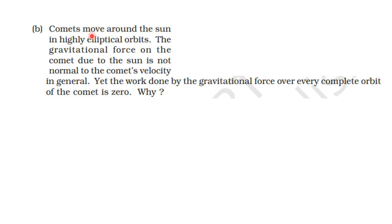Comets move around the sun in highly elliptical orbits. The gravitational force on the comet due to the sun is not normal to the comet's velocity in general. Yet the work done by the gravitational force over every complete orbit of the comet is zero.